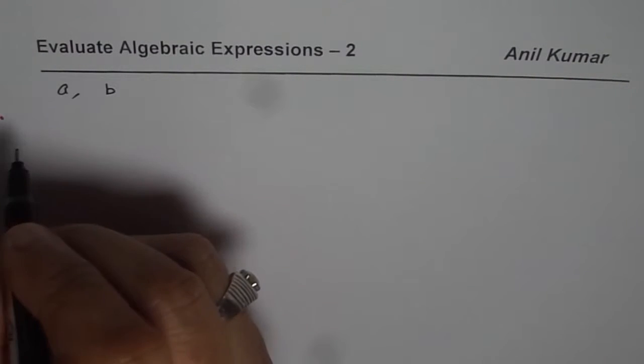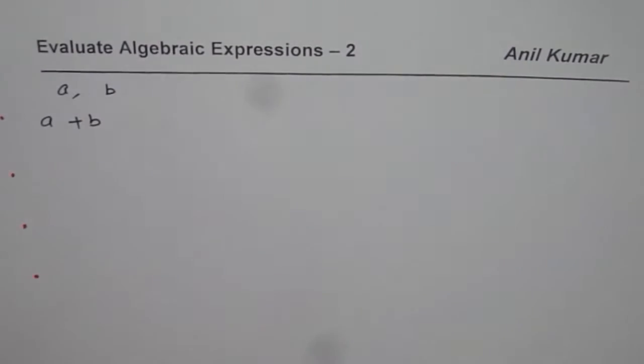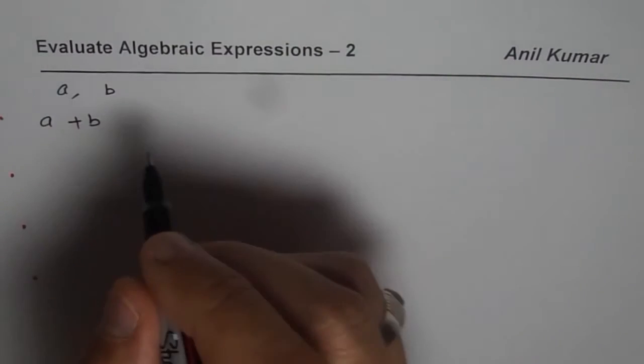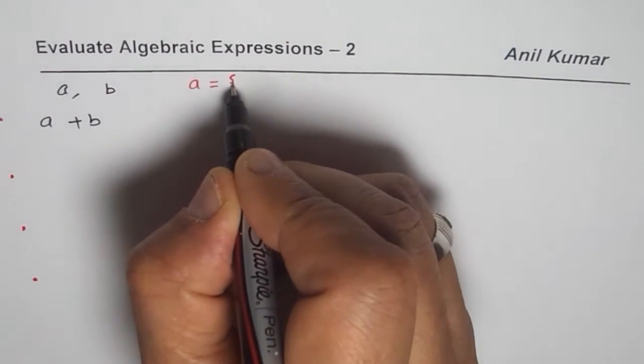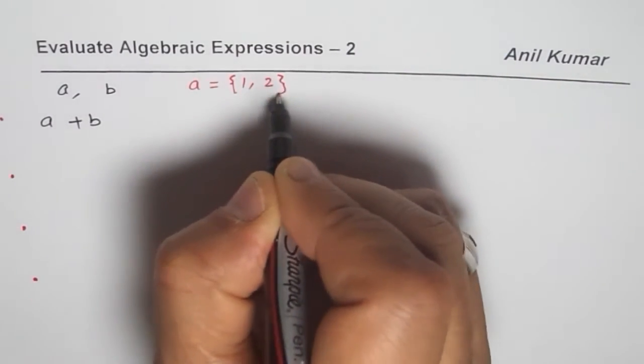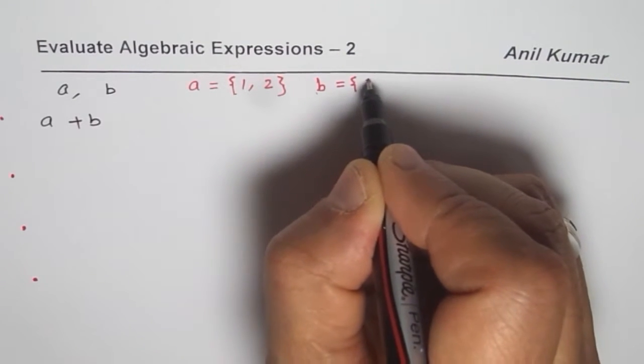To begin with let us take a simple expression A plus B and we will evaluate them for A and B values. Let us take constant values of A and B. Let us say A equals values 1 and 2 and B equals 3.